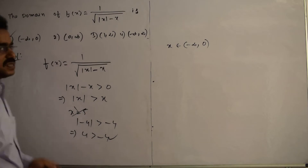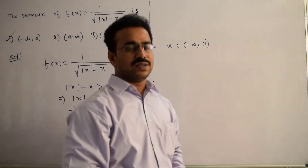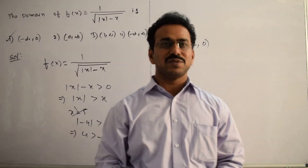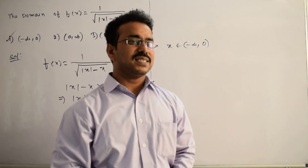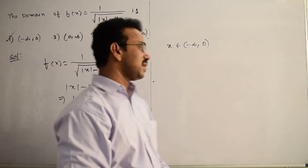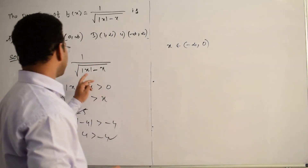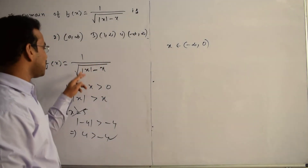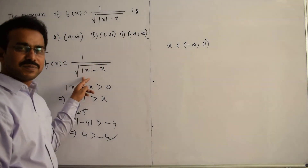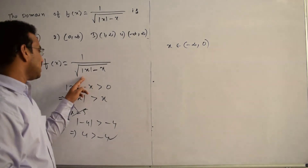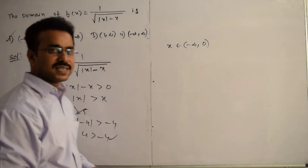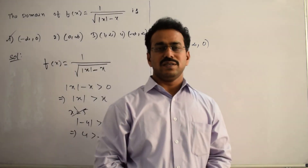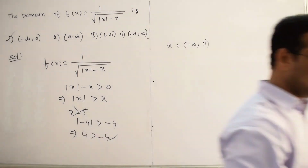In summary, the process used here was to apply the definition of the square root and the condition that the denominator can never be 0, giving us |x| - x > 0. Thanks for watching, all the best.